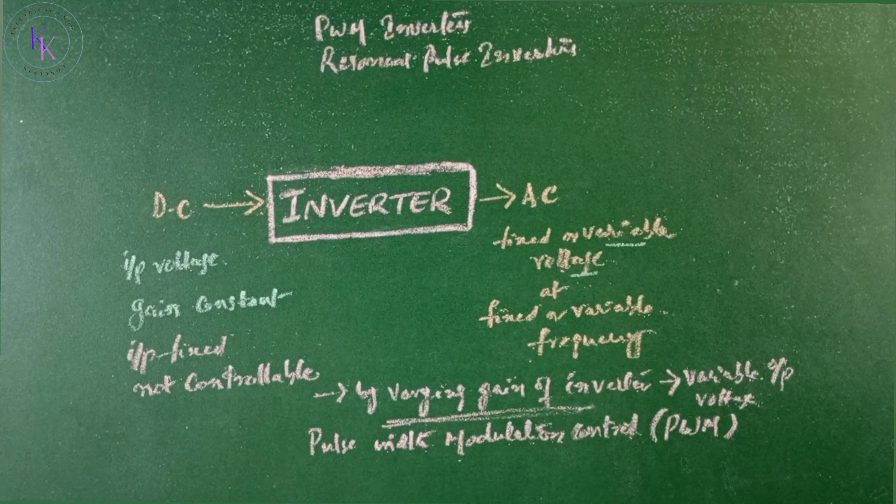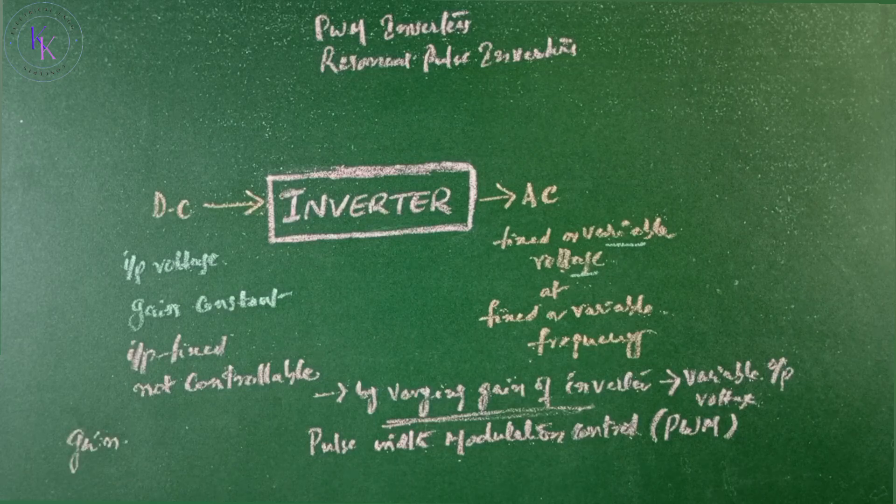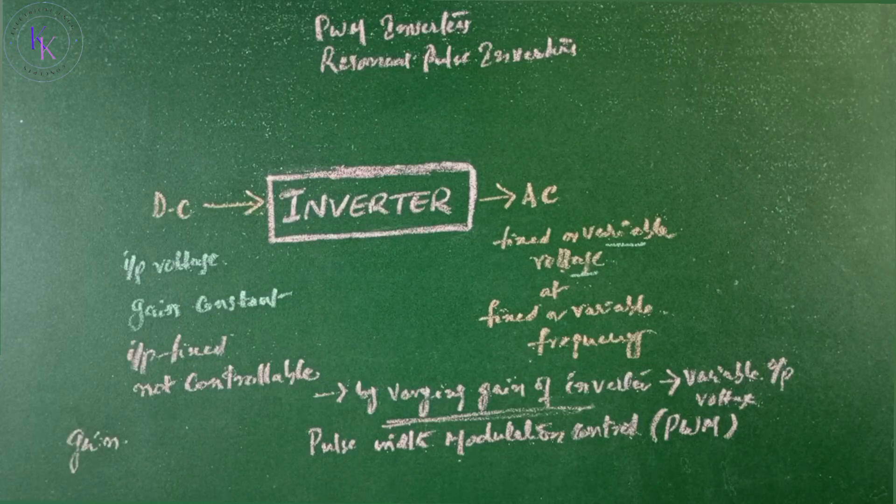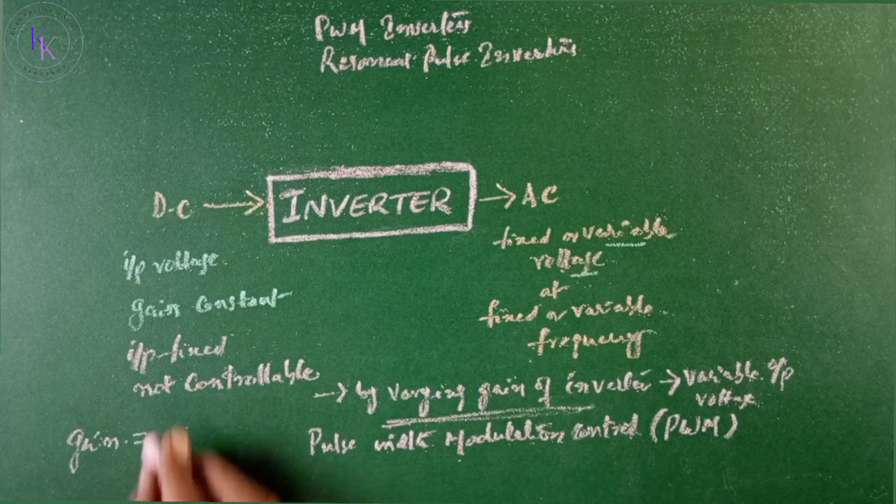The inverter gain may be defined as the ratio of AC output voltage to DC input voltage.